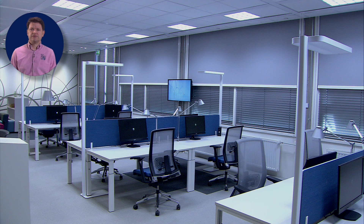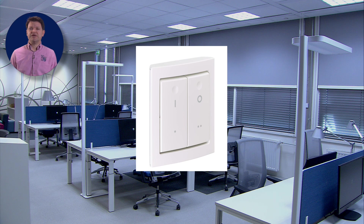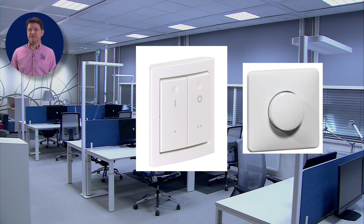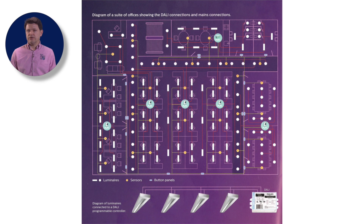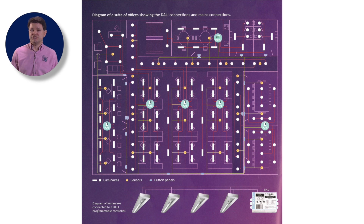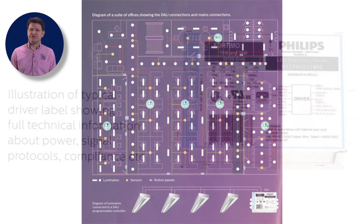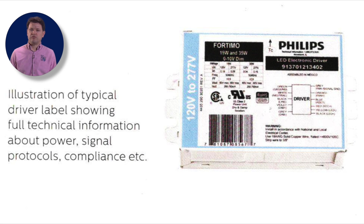Firstly, the luminaires must be capable of being switched on and off and preferably dimmed. This means that you will need dimmable drivers that speak the same signal language as the control system. Another key factor is zoning or grouping, where several luminaires in a group operate together — they switch on, off, or dim the same amount at the same time. This is usually achieved by having luminaires with addressable drivers.